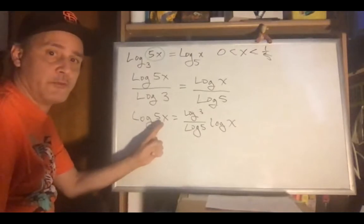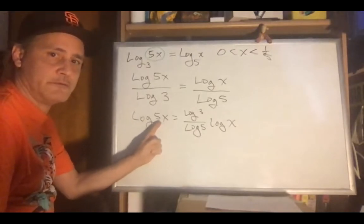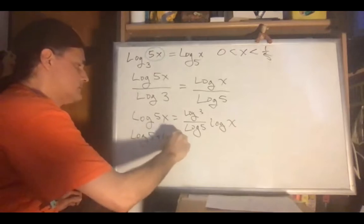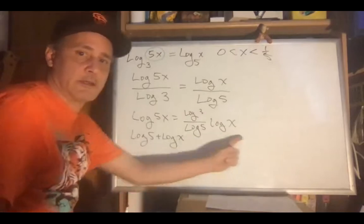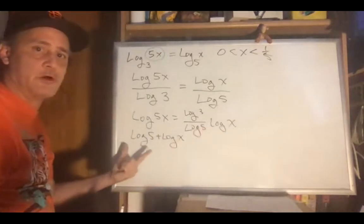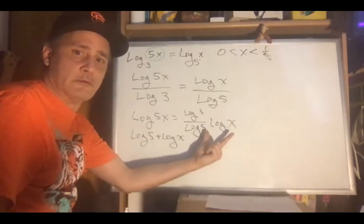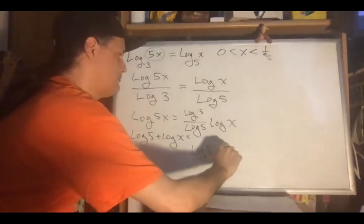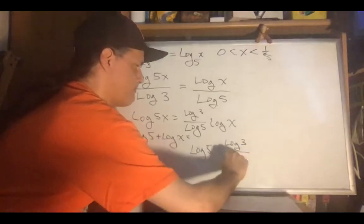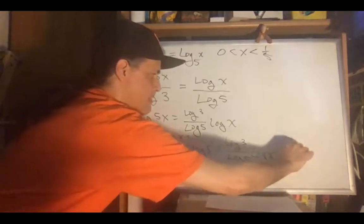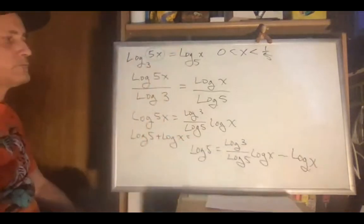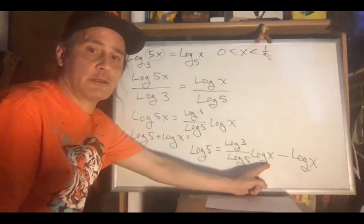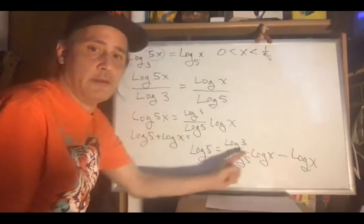Now I'm going to transform this. If you have multiplication in the value, that means originally you would have added the exponents, so this is now going to become log 5 plus log x. Now I'm going to subtract the log x to get everything on the same side, so there's going to be a log 5 on this side and then a minus log x. Then we factor out the log x, and this is going to become minus 1, and then we have this fraction.